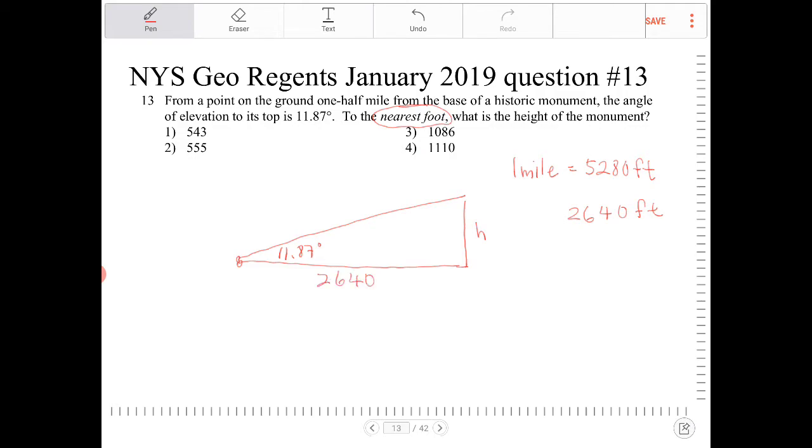And since H is opposite of 11.87 and 2640 is adjacent to it, I'm going to use tangent. So tangent of 11.87 is equal to H over 2640.